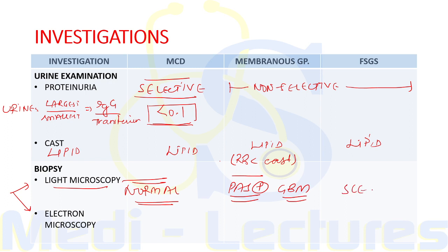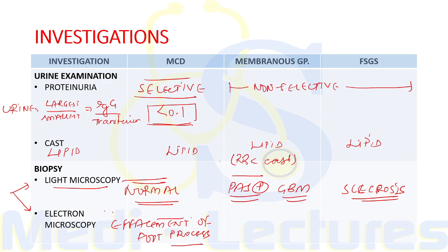In focal segmental glomerulosclerosis, there is presence of sclerosis on light microscopy. On electron microscopy, there is effacement of foot processes of the podocyte (visceral epithelial) layer in both minimal change disease and FSGS. In membranous glomerulopathy, subepithelial humps are present on the glomerular basement membrane, made up of IgG deposited on the GBM.